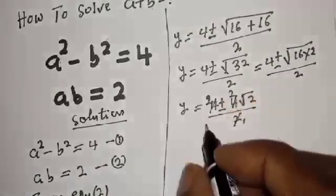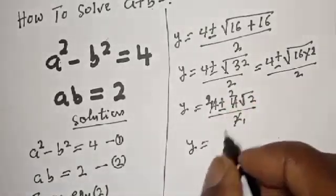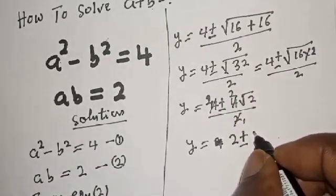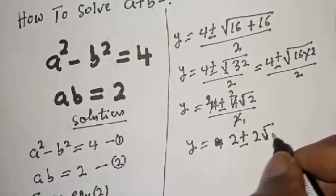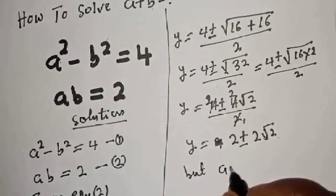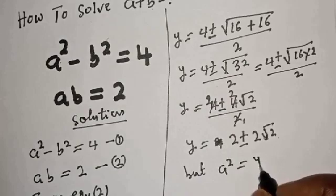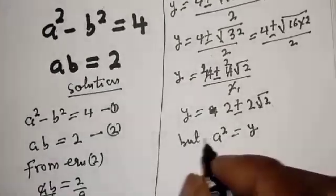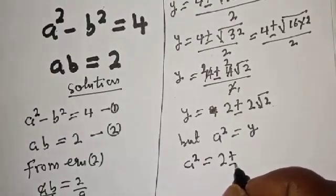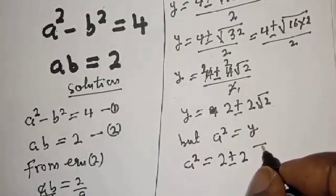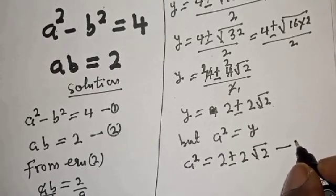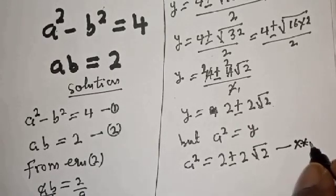Simplifying by dividing through by 2, y equals 2 plus or minus root 2. But a squared equals y, so a squared equals 2 plus or minus root 2. Let's call this equation star star star.